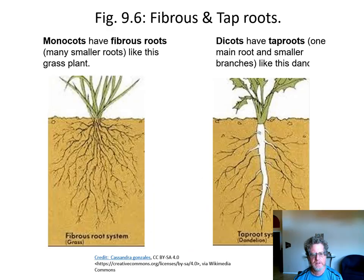Monocots have fibrous roots — if you dug up the grass in your lawn you wouldn't find one big root, you'd find a lot of little roots all spread out with a lot of surface area to absorb as many nutrients and as much water as possible. A dicot root, like a dandelion, would have a big taproot — one main root with smaller roots coming off it.